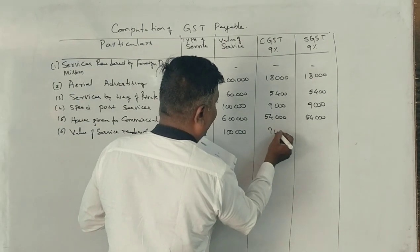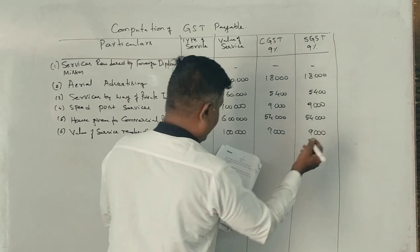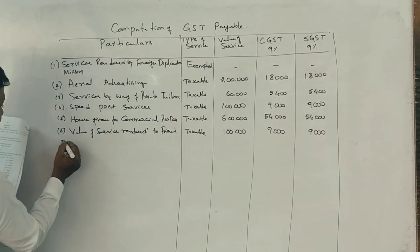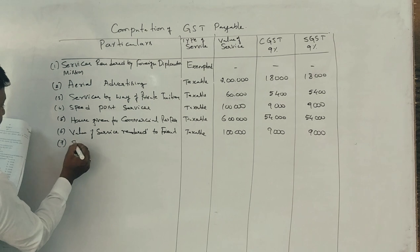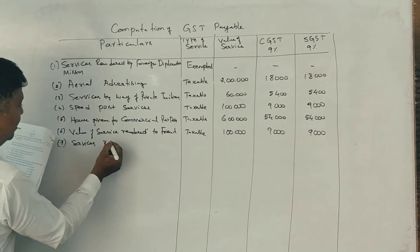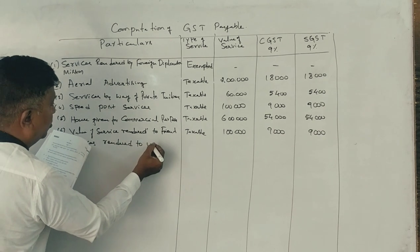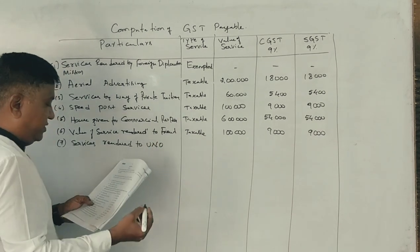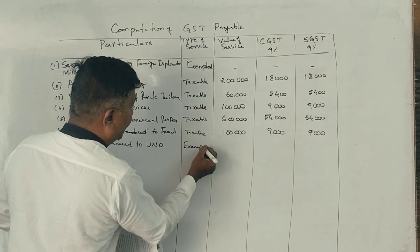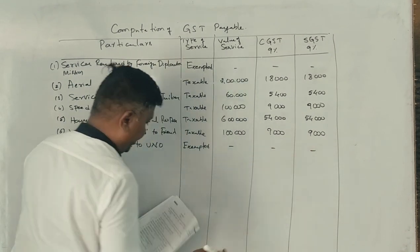So, 9,000 and 9,000 is applied. Next point: services rendered to UNO — services rendered to UNO are fully exempted. Therefore, it is nil (dash).